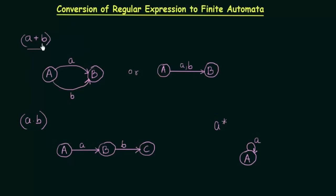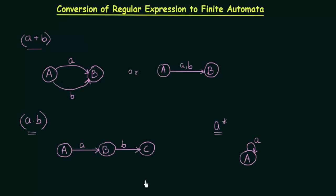If you get the form A union B, this is how you design it. If you get A and B like this, this is the way you have to design it. And if you get a closure of any input, this is the way you have to design it. Keeping these rules in mind, we will be seeing examples from the coming lectures.